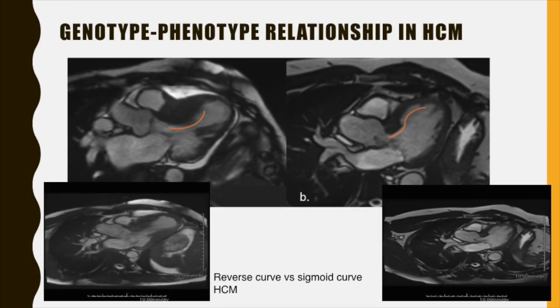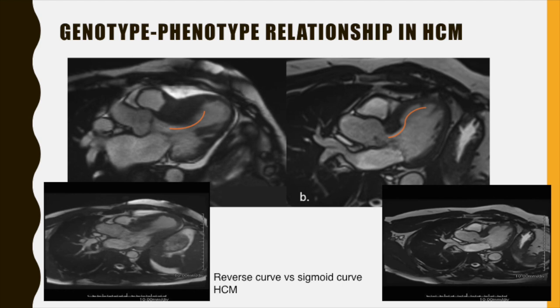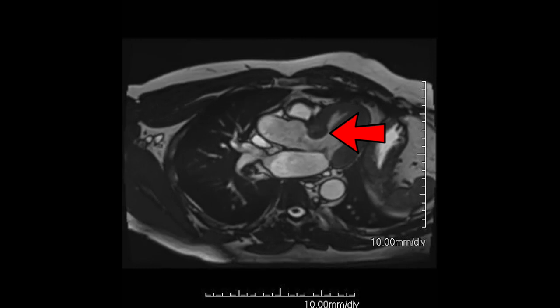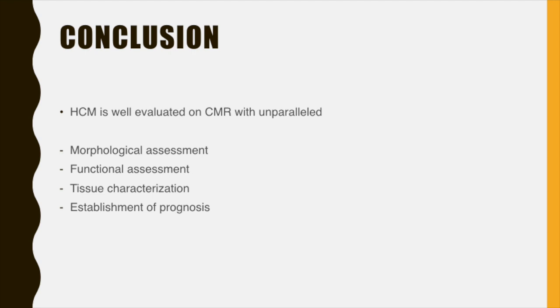Finally, it is possible to perform genotype-phenotype analysis of HCM on CMR, and patients with any genetic mutation are likely to demonstrate reverse curve HCM in comparison to sigmoidal HCM. The example on the left is of a patient with a MYBPC3 mutation showing reverse curvature HCM. The second patient also had a mutation — a PKP2 mutation which maps to arrhythmogenic cardiomyopathy — showing sigmoid curvature. Thus to conclude, CMR is a comprehensive assessment tool in patients with known or suspected HCM, providing morphological and functional parameters as well as tissue characterization, allowing ascertaining the diagnosis and providing significant prognostic information and risk prediction for sudden cardiac death.